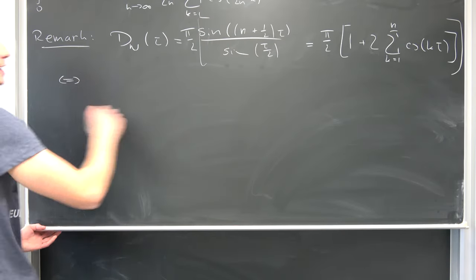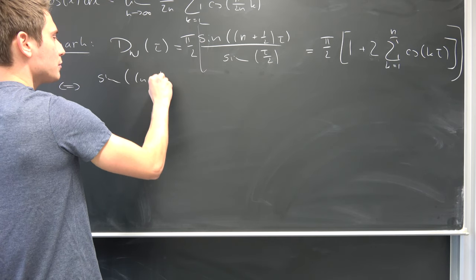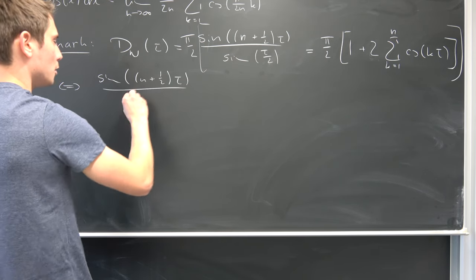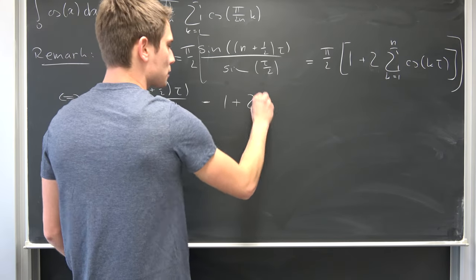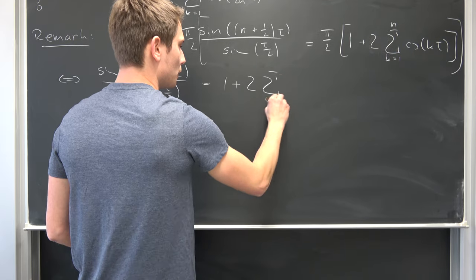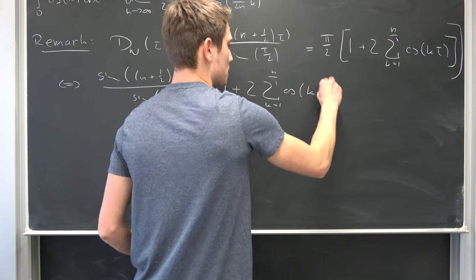So that's equivalent to saying that we have the sine of n plus 1 half times tau over the sine of tau over 2 being equal to 1 plus 2 times the sum running from 1 to n of cosine of k times tau.